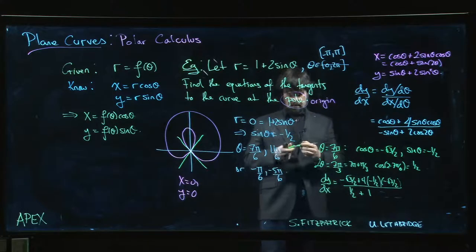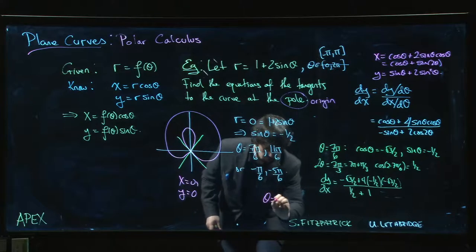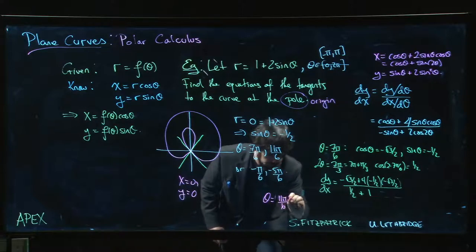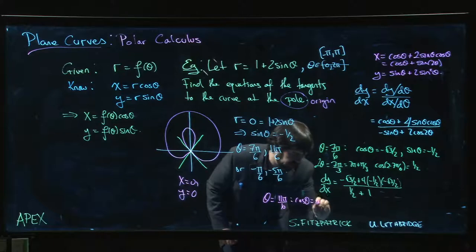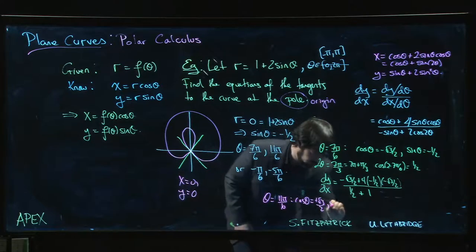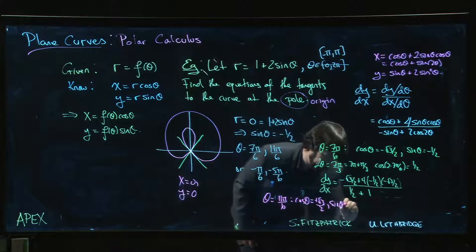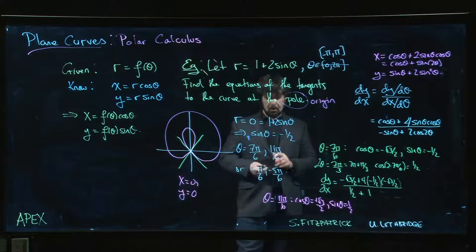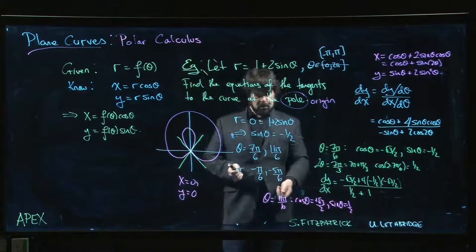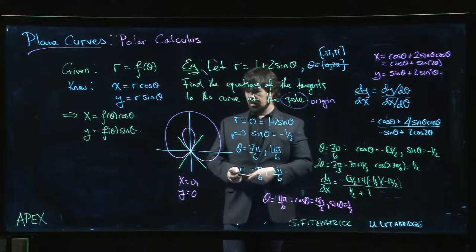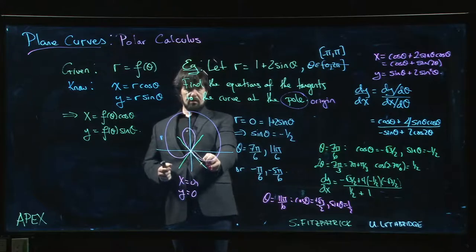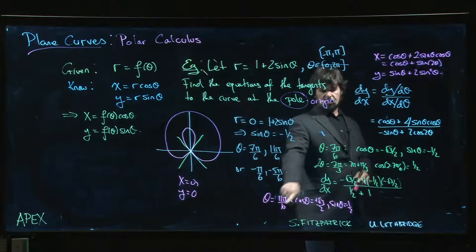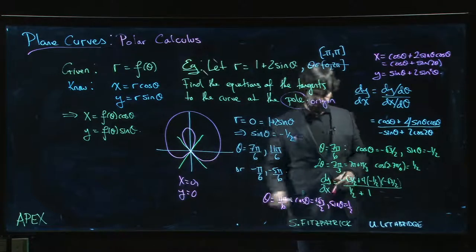And if we want to do theta is equal to 11 pi over 6, so then cos theta will now be plus root 3 over 2. Sine theta will be still minus 1 half, cosine of 2 theta, so 11 pi over 6, that's 11 pi over 3, 11 pi over 3 is here. It's 1 less than 4 pi, that'd be 12 pi over 3. So actually, cos 2 theta will still be plus 1 half, because cosine is positive in quadrant 4,